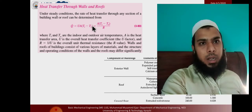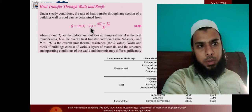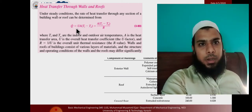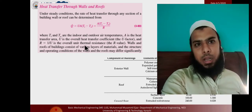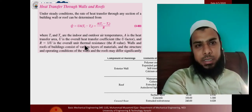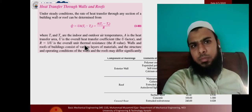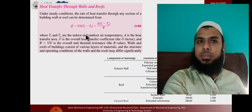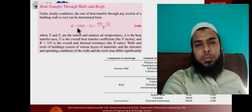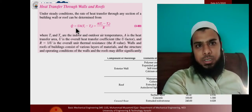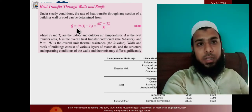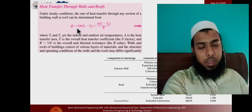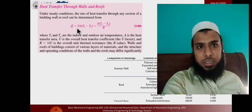If the outer temperature is higher, it becomes TO minus TI. In winter, the formula remains Q = U·A·(TI - TO), because the internal temperature is around 22 degrees centigrade and the outer temperature will be very low, like 7 or 8 degrees centigrade. U is the overall heat transfer coefficient, which also includes the thermal conductivity.